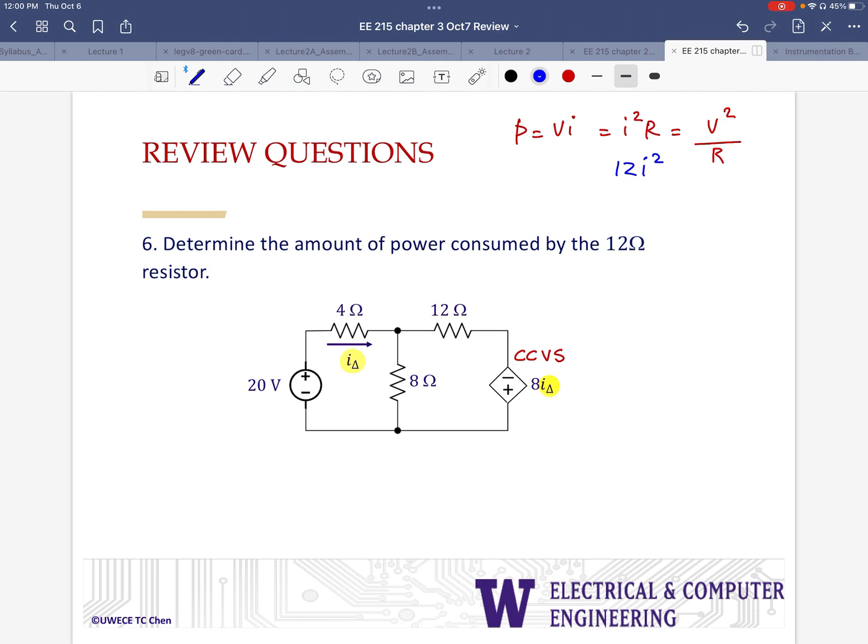I'll say that there is a current I sub delta flowing in this particular loop, and there is a different current, say I1, flowing through that particular loop. So, I've got current I sub delta flowing in this way, and then I1 flowing in this way. So this is going to be I1, because I1 is the current going through that 12 Ohm resistor.